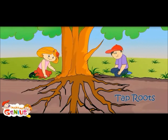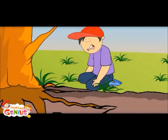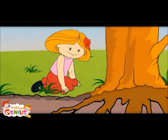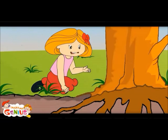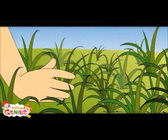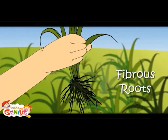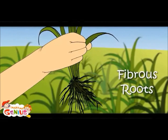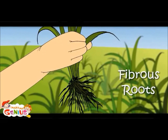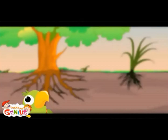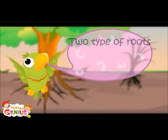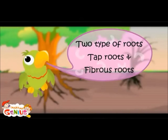These are tap roots - they are long and have side roots also. Oh, do all plants have tap roots? Mostly big plants have tap roots, as they have to go very deep. The small plants have fiber-type roots, called fibrous roots. Yes, as the plants are not large in size. So there are two types of roots: tap roots and fibrous roots.